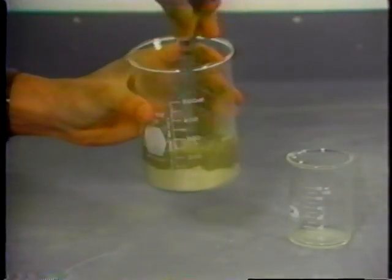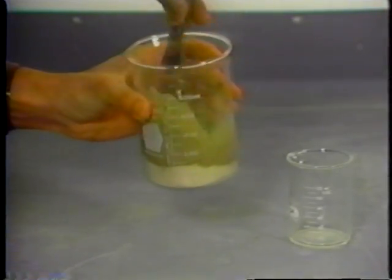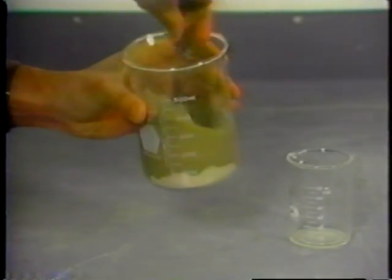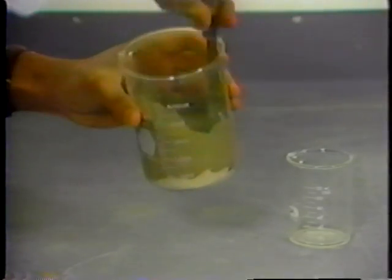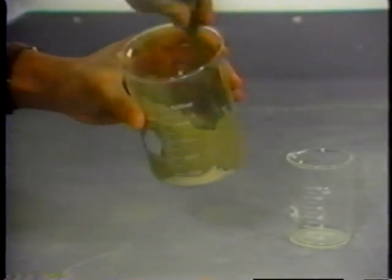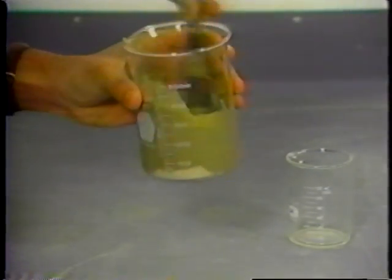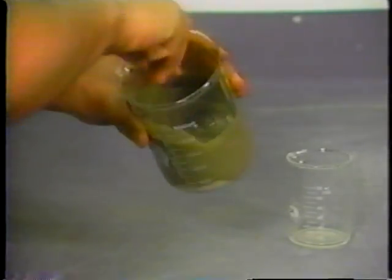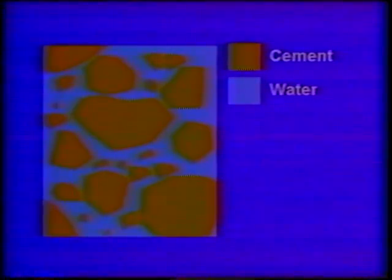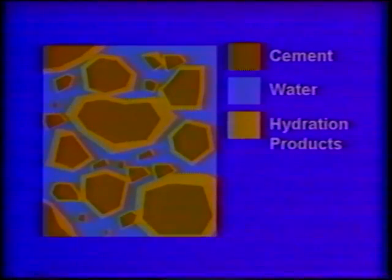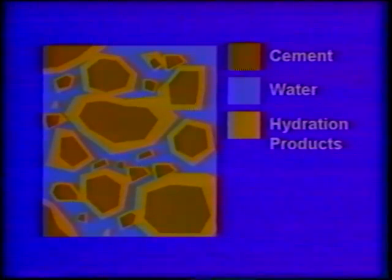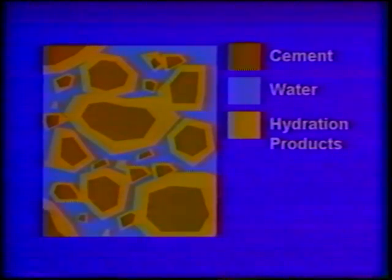The dissolving cement increases the levels of calcium and silicon in the solution. When the concentrations of dissolved species reach critical levels, new solid products are formed through a precipitation reaction. The solid hydration products form coatings around the particles of cement and gradually fill the space between.